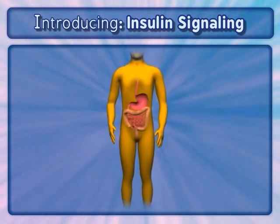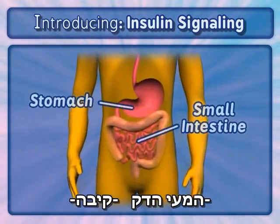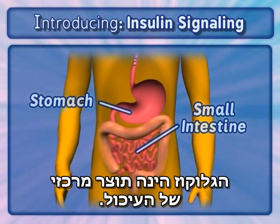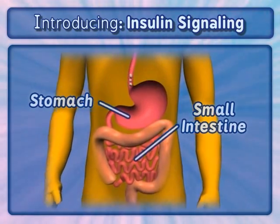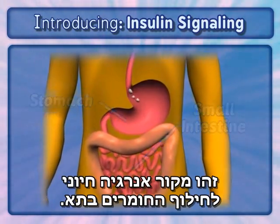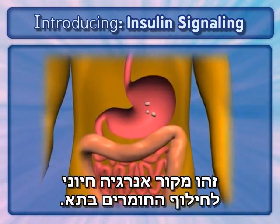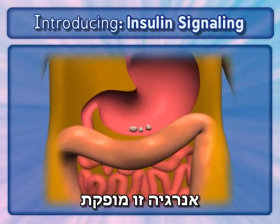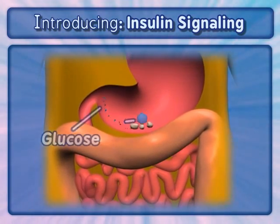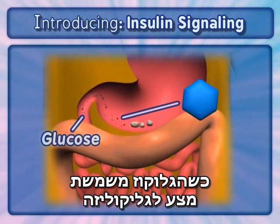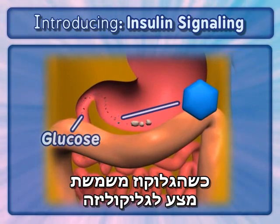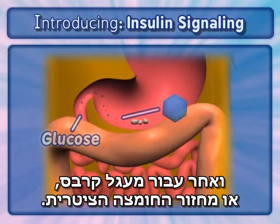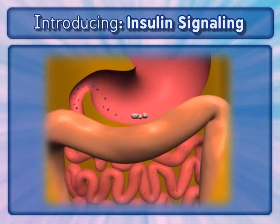Glucose is a good example. Glucose is a critical product of digestion. It is an essential energy source for cellular metabolism. This energy is produced when glucose is used as a substrate for glycolysis and then the Krebs, or citric acid, cycle.